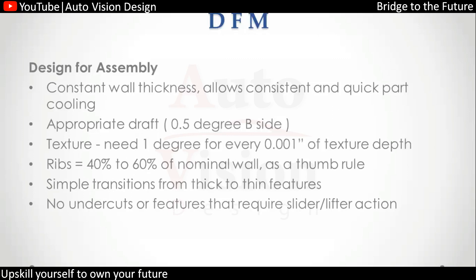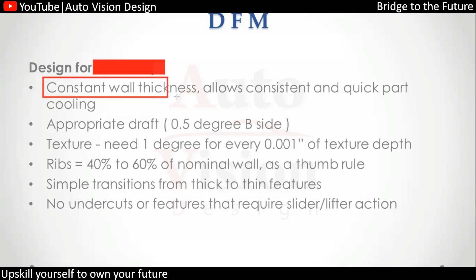Similar to Design for Assembly, we have Design for Manufacturing. For Design for Manufacturing, we check the wall thickness of the part — we need to have constant wall thickness and make sure the part will allow for quick cooling, which helps in manufacturing.